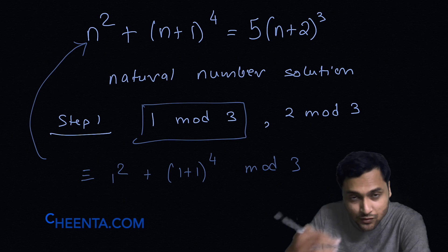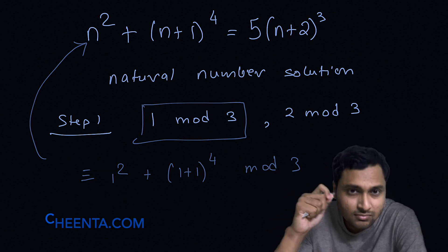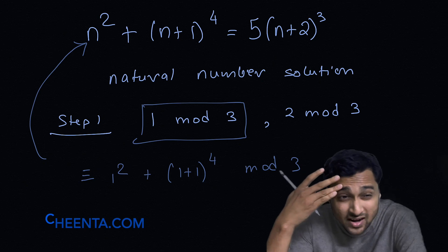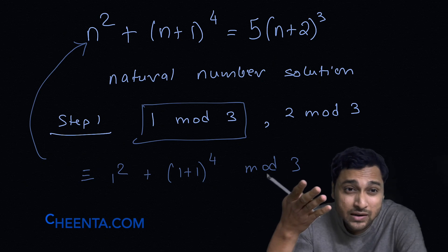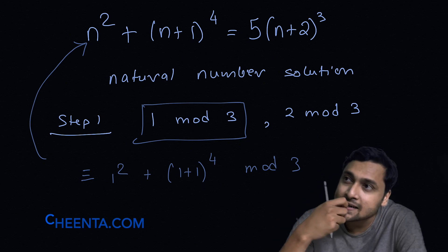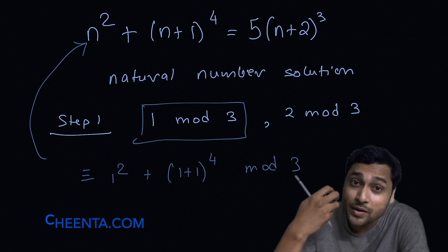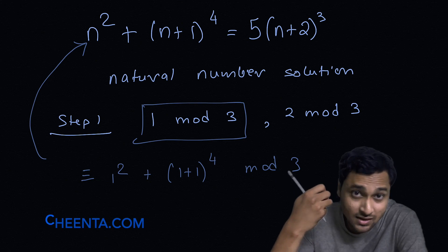If you don't know modular arithmetic, this will be a very nice place to pick it up. A very good book is David Burton's Elementary Number Theory. It was discovered by one of the greatest mathematicians of all time, Gauss.